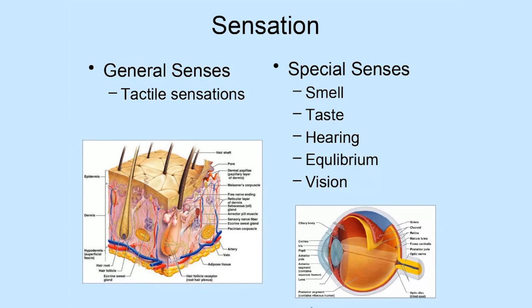The other type of sensation is what's known as the special senses. The special senses have receptors that are much more complicated than general senses do. Their receptors are really more like sensory organs, made up of multiple tissue types with some complexity to their structure. The special senses include smell, taste, hearing, equilibrium — our body's ability to detect posture and balance — and vision.